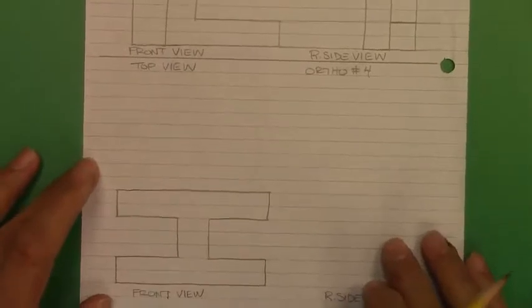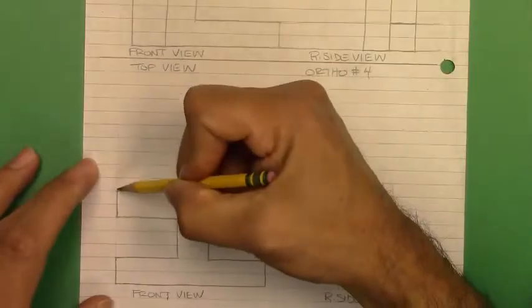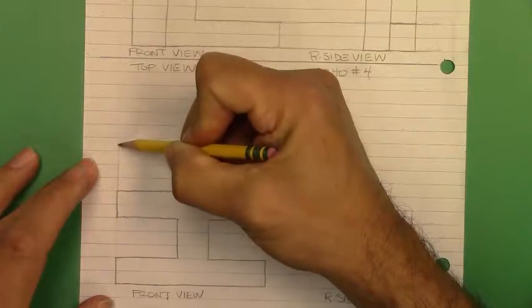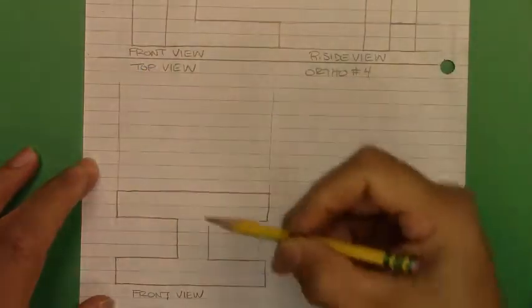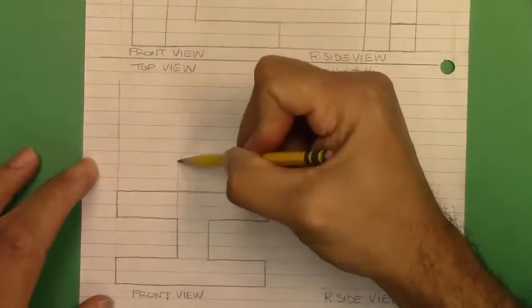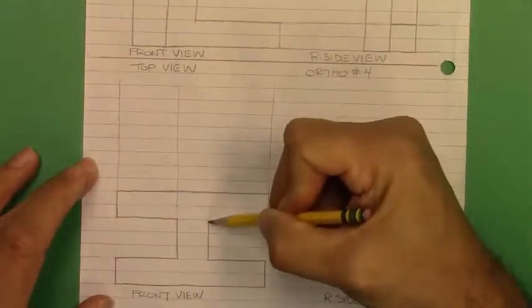Okay, let's go ahead and finish this drawing. So like I mentioned earlier, you should have four projection lines going up. So we're going to have one, two, three, four.